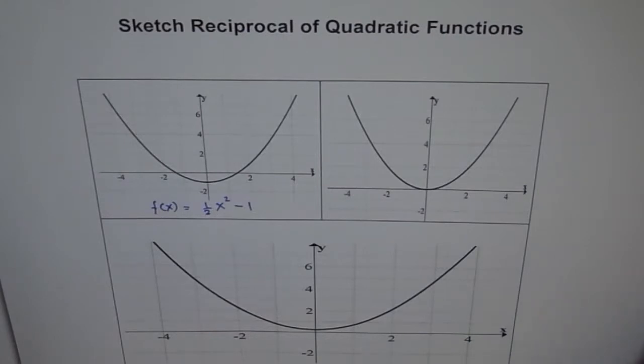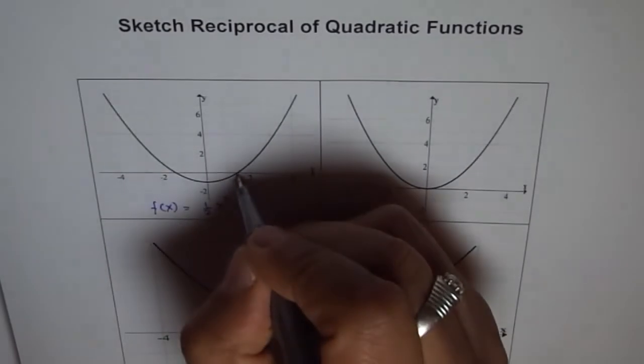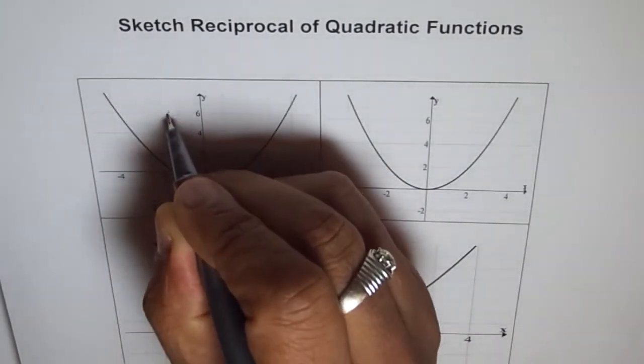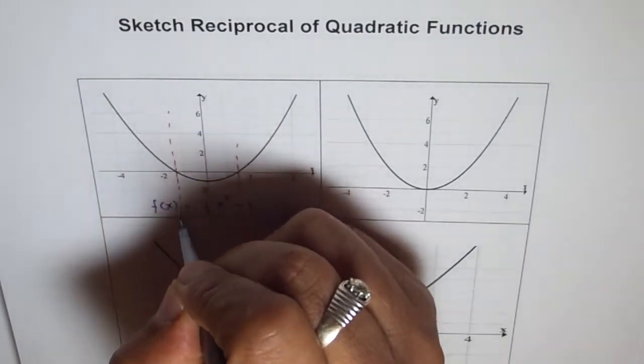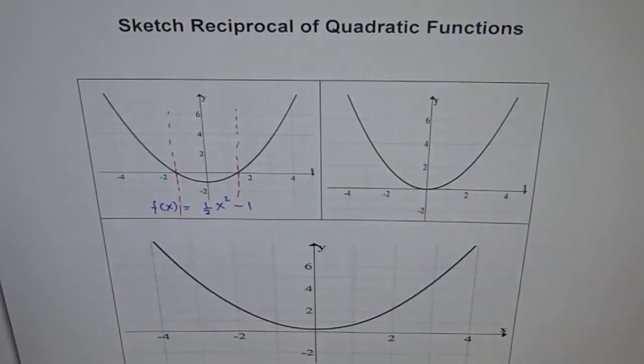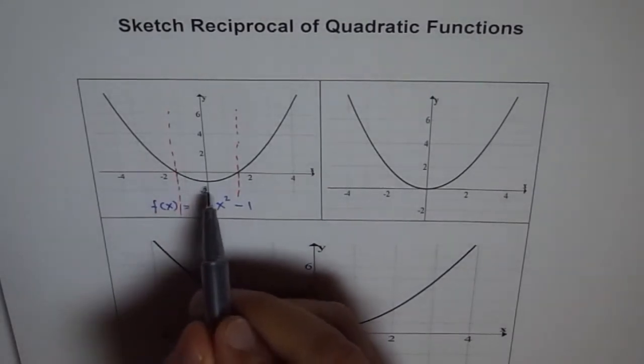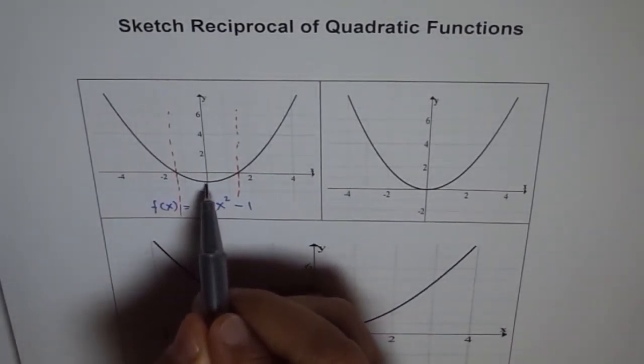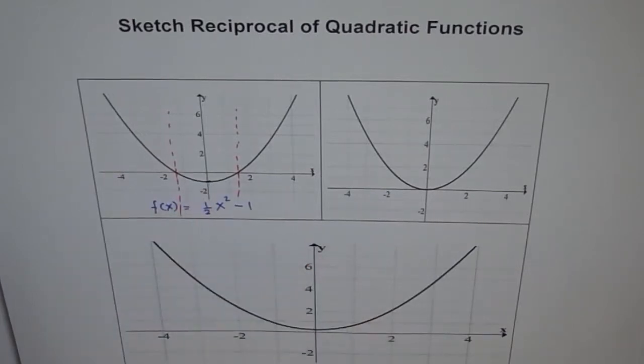How will you draw a reciprocal of this? You will first look for x-intercepts and draw a vertical asymptote there. So you got a vertical asymptote here. And the center portion is all negative for you here. So center portion, this value seems to be minus one. So if it is minus one, reciprocal of minus one will be minus one. So this point is common.